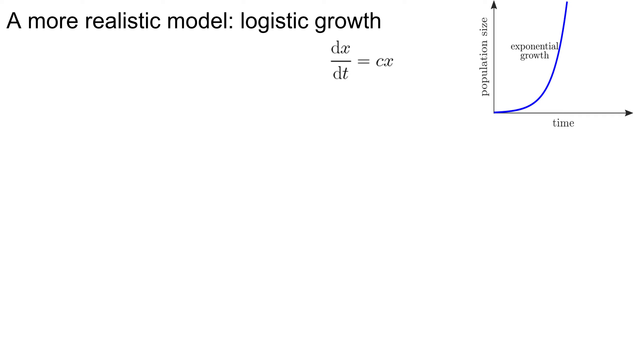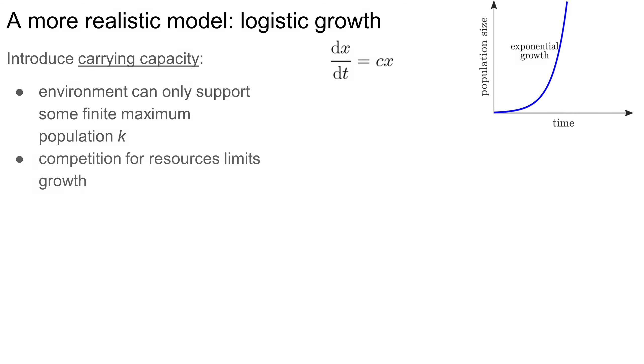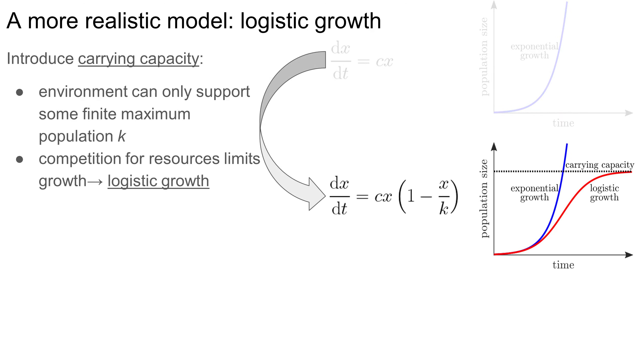Now, in reality, exponential growth can't continue forever. The environment can only support a finite population, called a carrying capacity. Let's use the letter K to denote the carrying capacity. Another way to think about the carrying capacity is that once the population gets big enough, everyone's competing for resources, and this slows down the rate at which everyone can reproduce. This competition for resources results in something called logistic growth, modeled by the equation on the right, where the growth starts off fast, but slows down as the population x approaches the carrying capacity K.